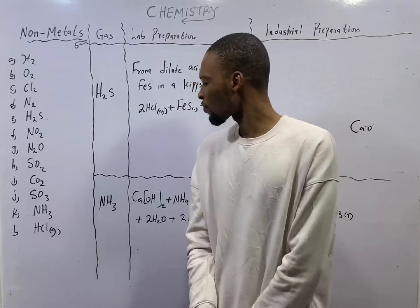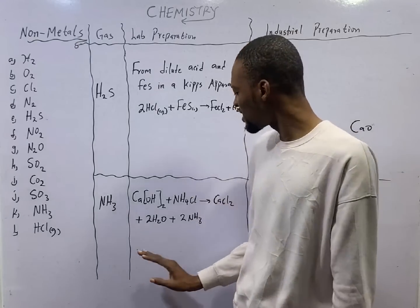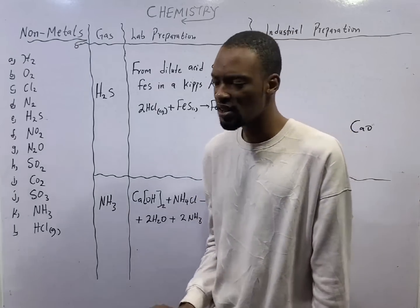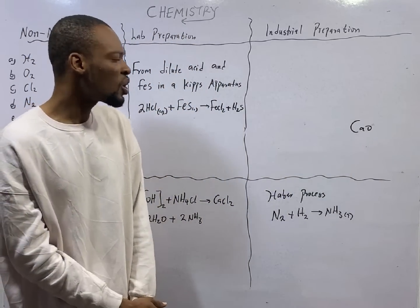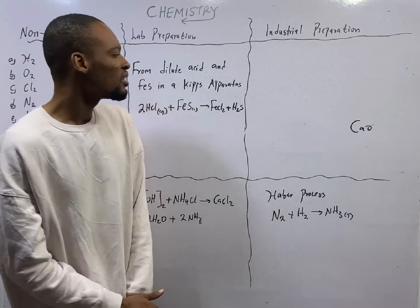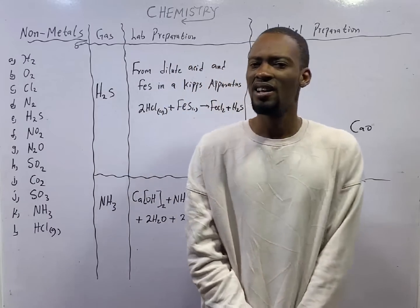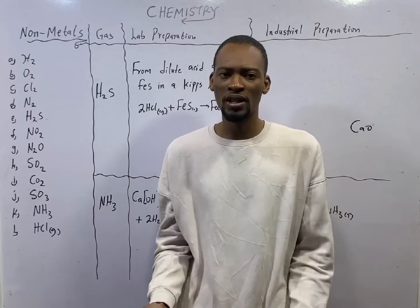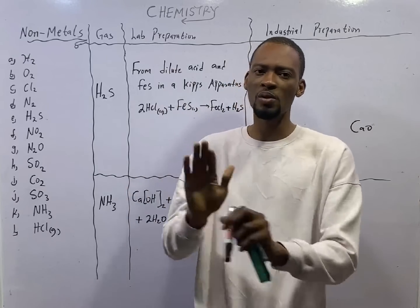Now, JAMB past question. Why slaked lime? The reason we use slaked lime to produce ammonia is one, it is cheap. And two, it is not deliquescent. What is deliquescent? Deliquescent is a property of salt where salt absorbs water from the atmosphere and it dissolves, it turns to solution.